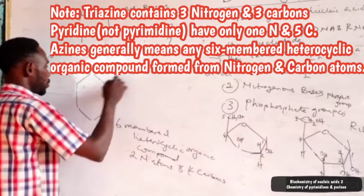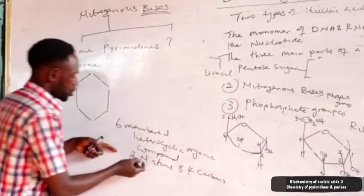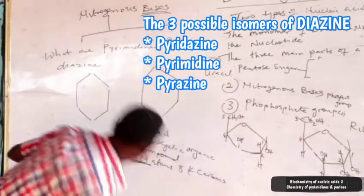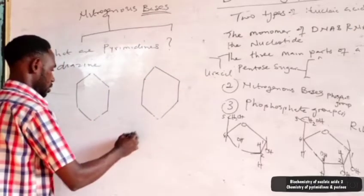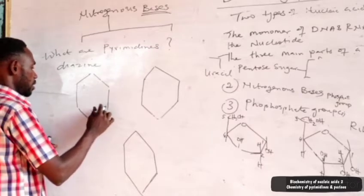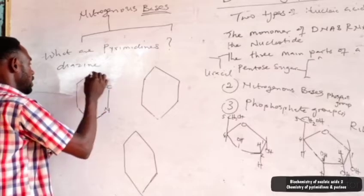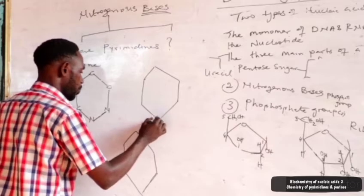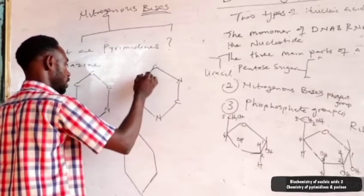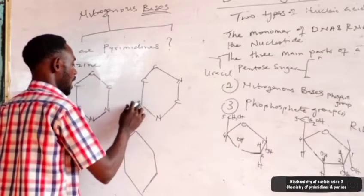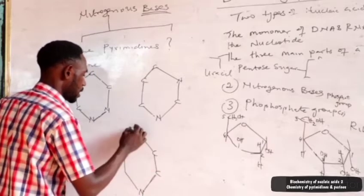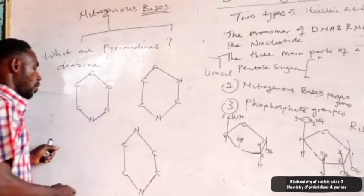Now, the other isomers differ in position. What matters is that there are four carbons, and the position of the nitrogen classifies the types of diazine we have. The two nitrogens can occur adjacent to each other, or separated by one carbon, or separated by two carbon atoms. So these are the three forms of diazine.